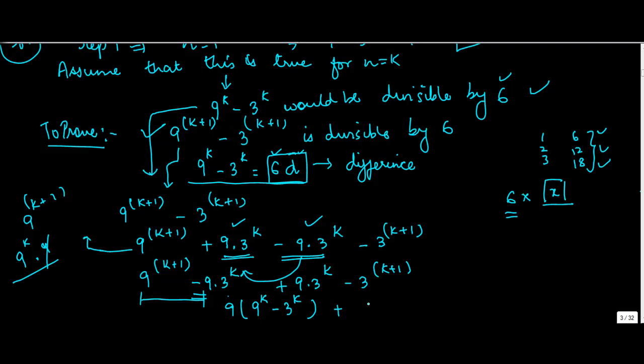Similarly, if I take 3^k common here, what am I left with? 9 minus 3. Did you notice something? This 9^k minus 3^k equals 6d. So you can write this as 9·6d plus 3^k·6.